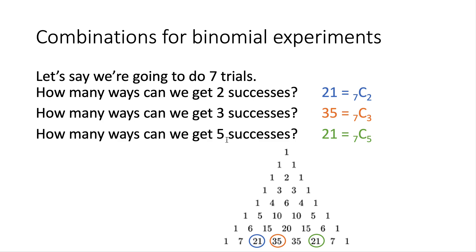Just because there's the same number of ways to get two successes and five successes doesn't necessarily mean the probability of those outcomes is the same. It would be equal if the probability of success and failure are the same — like flipping a fair coin, where the probability of two heads and five heads in seven flips would be equal. But if success and failure have different probabilities — say your team has a 70% chance of winning — then the probability of five successes would be much greater than two successes, even though the number of combinations is the same. We'll talk about that in the next video about the binomial distribution.